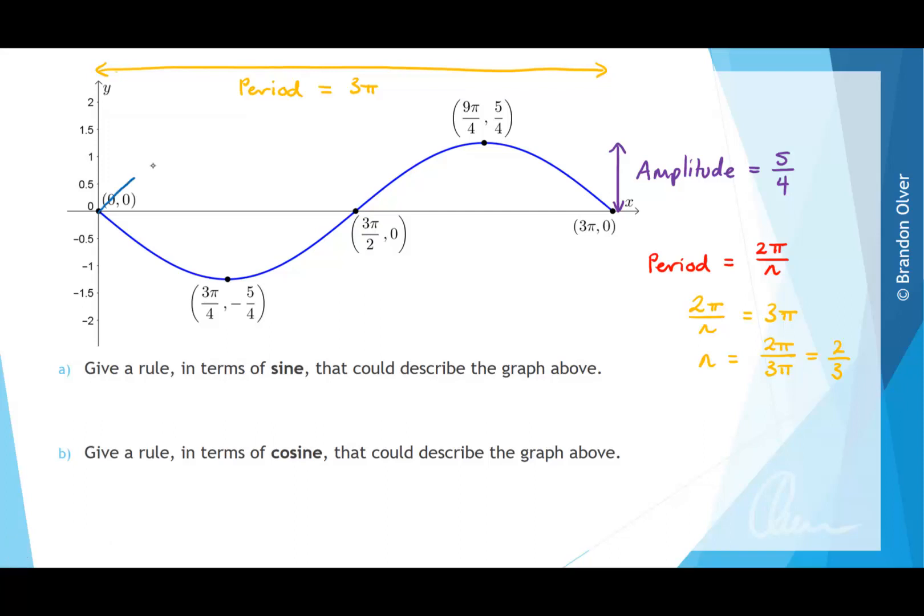Now if we were just going to start with a normal sine curve that described this graph, this is what it would look like. It would be going up first and then come down later. So we need to reflect that over the x-axis.